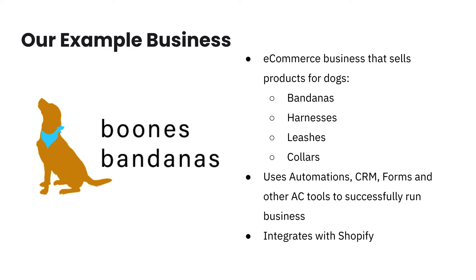Let's talk about our example business: Boone's Bandanas. Boone's Bandanas is an e-commerce business that sells products for dogs — things like bandanas, harnesses, leashes, and collars so you can deck out your dog in the best gear. They also have an animal shelter side of their business, operating as both an e-commerce store and a nonprofit. For their nonprofit, they hold adoption events at specific animal shelters they highlight each month, donating bandana sales to that shelter so all the dogs looking to get adopted are wearing nice bandanas.